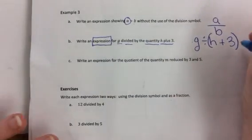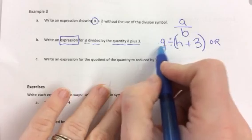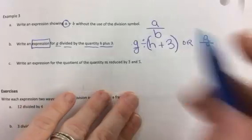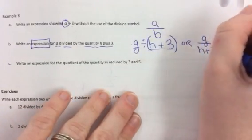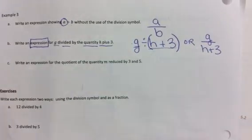We could write this another way. Using a fraction form, like a over b. Your dividend, in this case, is g. So that goes in your numerator. So we could write g over, your divisor is h plus 3. These two expressions are the same thing, just showing different ways of division.